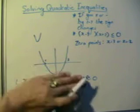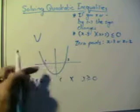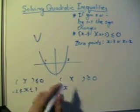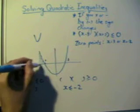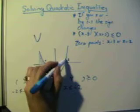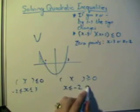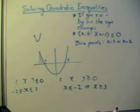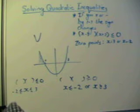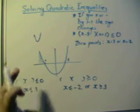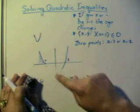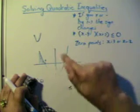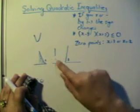If instead the product is bigger than or equal to zero, that's everything above the x-axis, which is all x-values smaller than or equal to −2 and all x-values bigger than or equal to 3 — two separate sets. This is the more visual method. Just remember to draw the parabola the correct way: for a positive x² it opens upward, for a negative x² it opens downward.